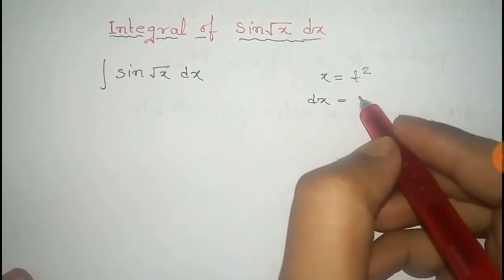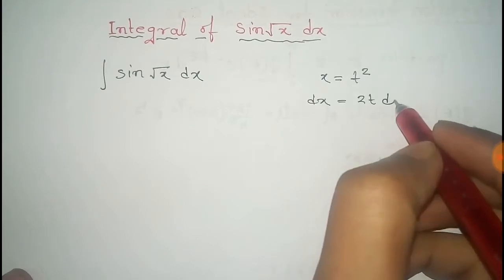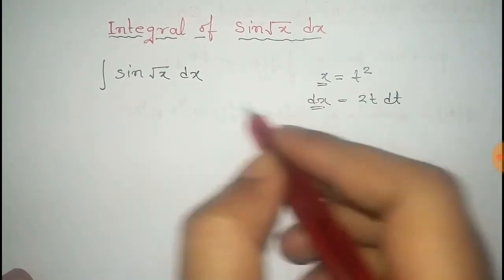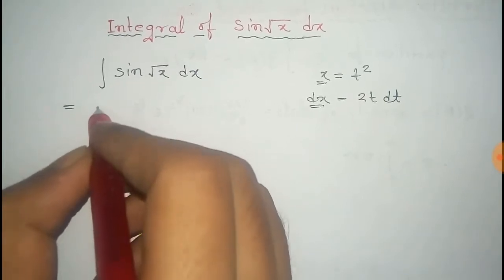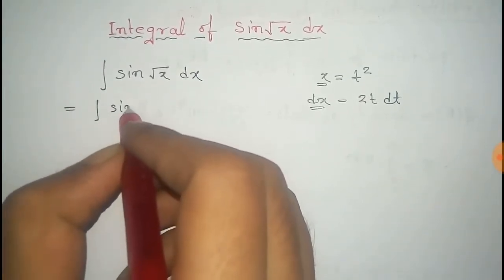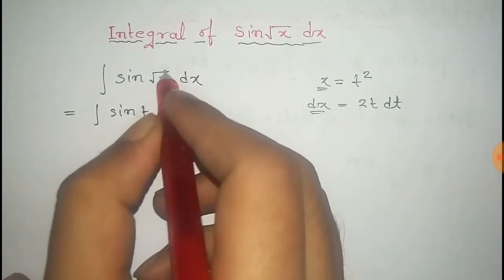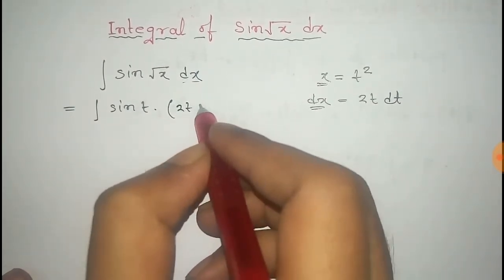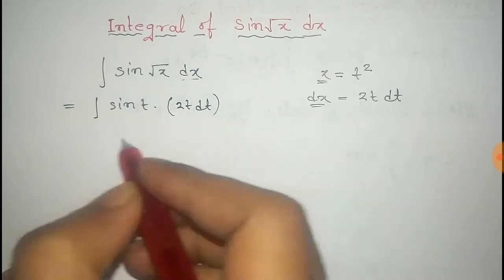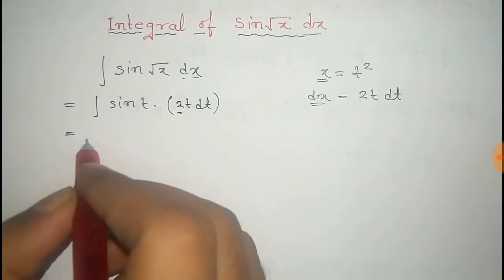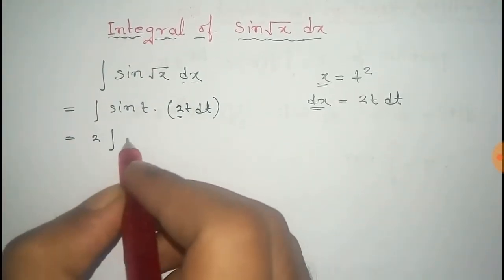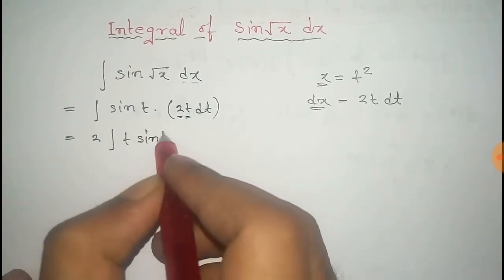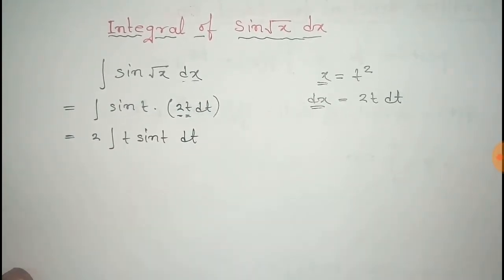Now, differentiating on both sides, we get dx equal to 2t dt. Now put the value of x and dx in this integral, so sin(√x) becomes sin(t), and dx has a value of 2t dt, giving us 2∫t·sin(t)dt.